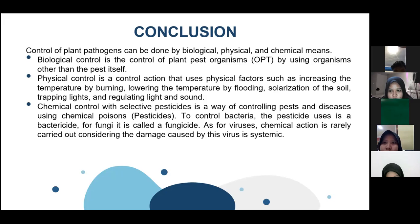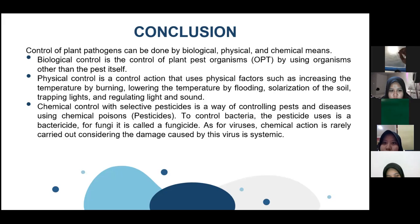Chemical control with selective pesticides is a way of controlling pests using chemical poison or pesticides. To control bacteria, the pesticide used is a bactericide; for fungi, it is called a fungicide. As for viruses, chemical action is rarely carried out considering the damage caused by viruses is systemic.